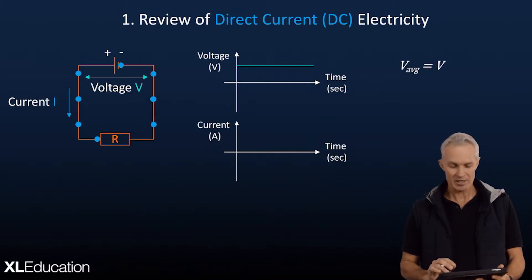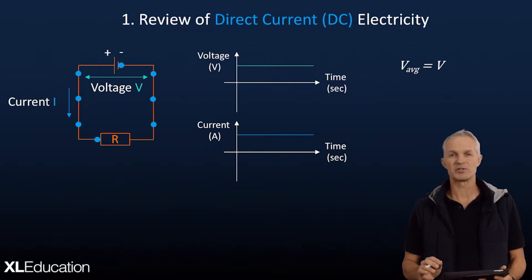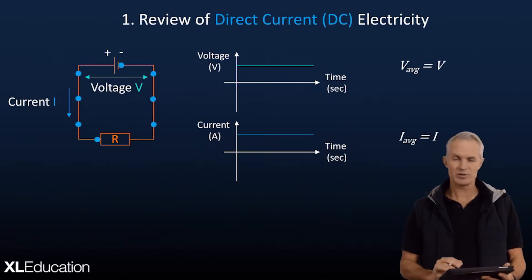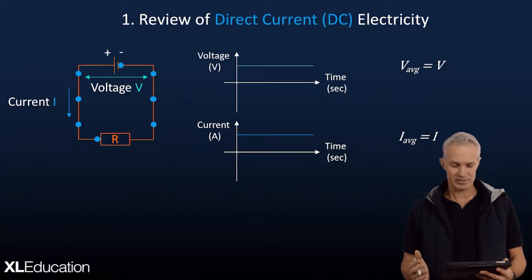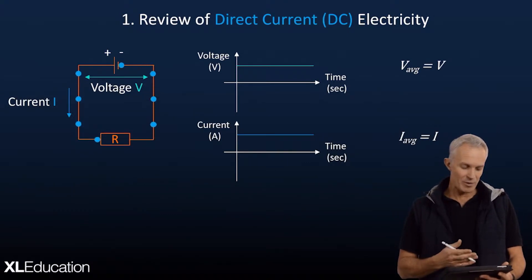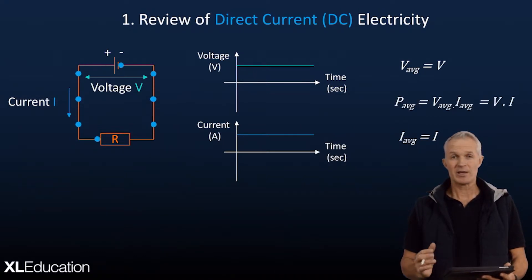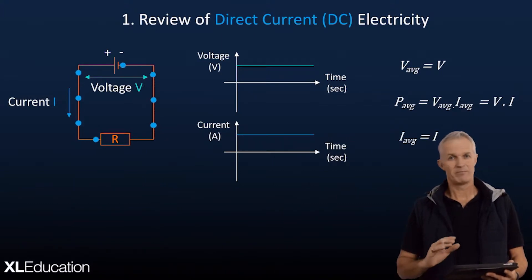The average voltage is simply constant — whatever V might be. Similarly for current: because the voltage is constant, current is also going to be constant, so the average current is just I. If we're looking at the power delivered to the resistor, power is simply voltage times current. That's just a quick review of DC.